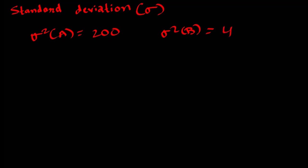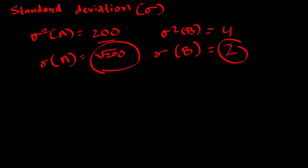Standard deviation σ is the square root of variance. So the square root of 200 is the standard deviation of A, and the square root of 4 is the standard deviation of B, which comes out to be 2. In terms of precise values, these come out to be 10√2 and 2.